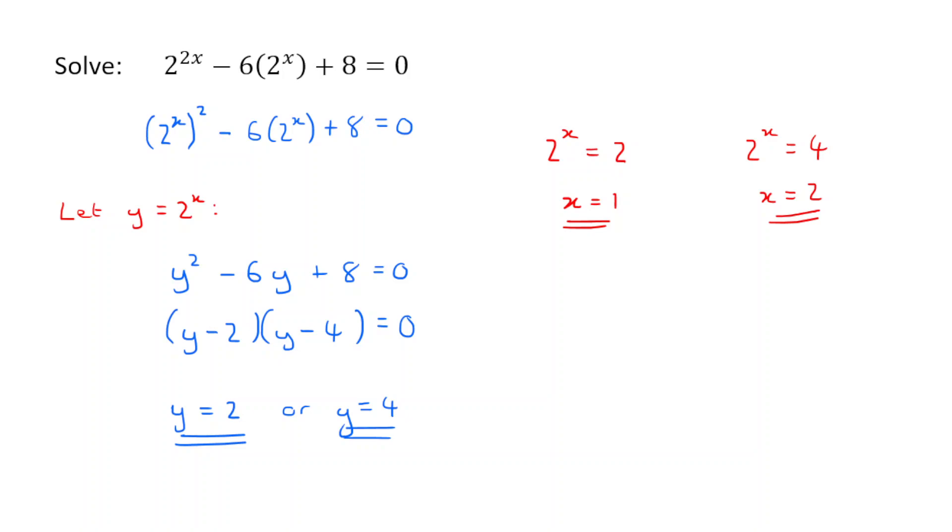So in other words, what I want you to see is sometimes you can have an equation of this form involving indices that looks very tricky. But actually, what you've got to do is use a substitution to turn this into a quadratic. You can then solve this quadratic and use the solutions to the quadratic to find your solutions of x.